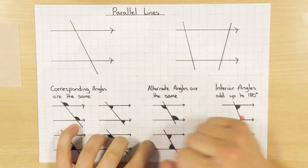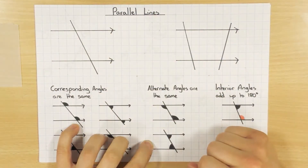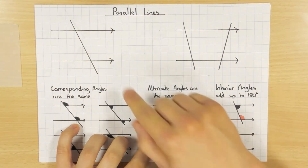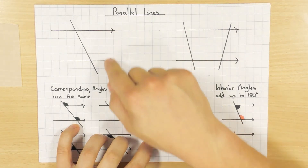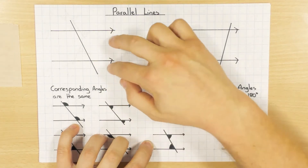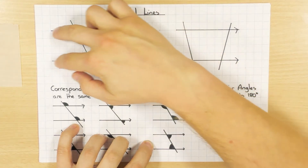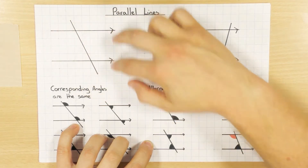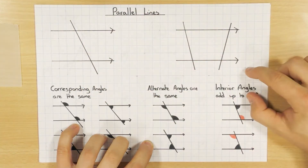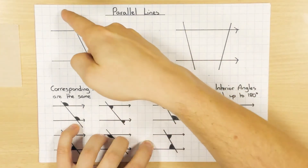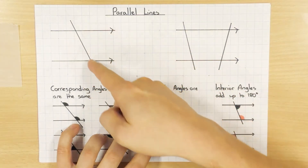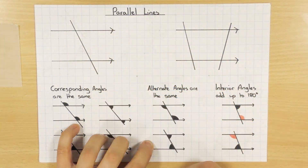On the diagram, you can always tell parallel lines because they'll always have two arrows. The two arrows here tell me that these two lines are parallel. What we're going to look at today are all the angles associated when you have a line passing through them.